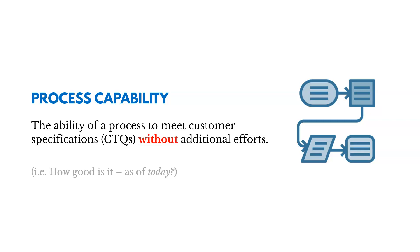Process capability is the ability of a process to meet customer specifications — to meet their CTQs — without additional effort. The question is: how good is it as of today? Where are we right now?